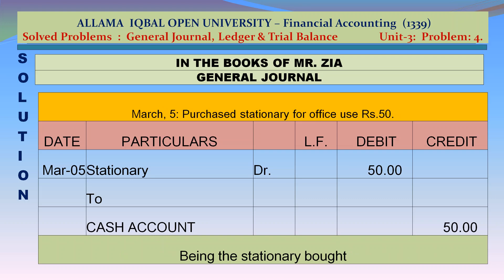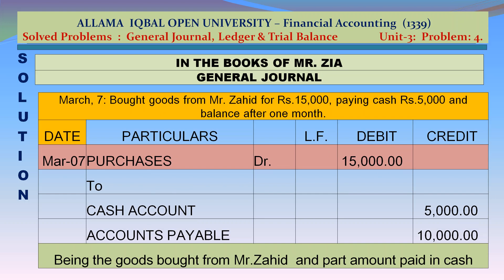March 5: Stationery account debit Rs 50 to cash account credit Rs 50 — being the stationery bought. March 7: Purchases account debit Rs 15,000 to cash account credit Rs 5,000 and accounts payable credit Rs 10,000 — being the goods bought from Mr. Zahid with part amount paid in cash.